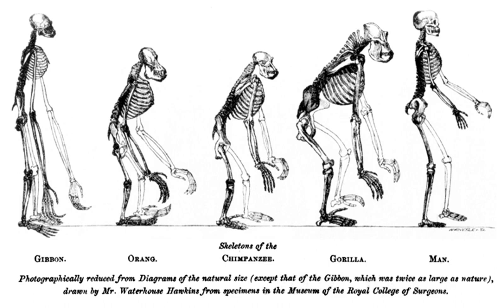In 1794, Charles Darwin's grandfather, Erasmus Darwin, asked: "Would it be too bold to imagine, that in the great length of time since the earth began to exist, perhaps millions of ages before the commencement of the history of mankind, would it be too bold to imagine that all warm-blooded animals have arisen from one living filament, which the great first cause endued with animality, with the power of acquiring new parts attended with new propensities, directed by irritations, sensations, volitions, and associations, and thus possessing the faculty of continuing to improve by its own inherent activity, and of delivering down those improvements by generation to its posterity, world without end."